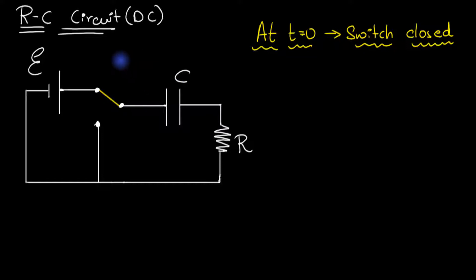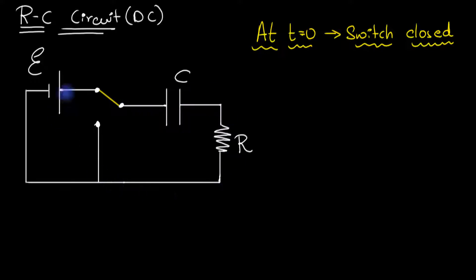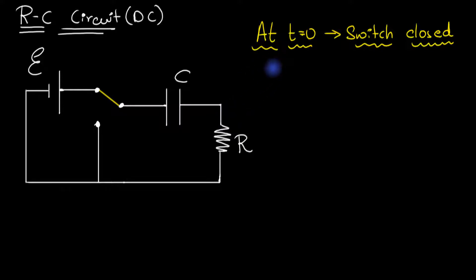My goal is to calculate everything — the voltage across these two elements, the charge on the capacitor, and also the current through the resistor, which is going to be the same thing. Let's try to understand what will be the values of these voltages, charge, and current at t equal to zero.